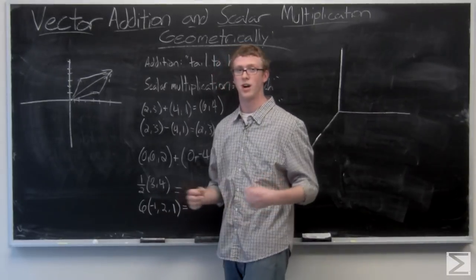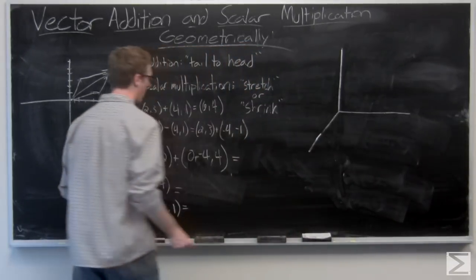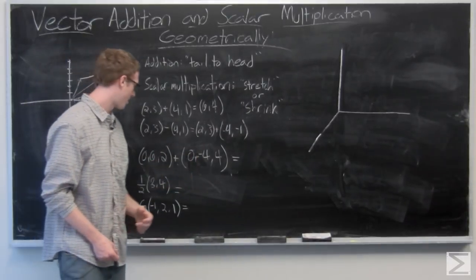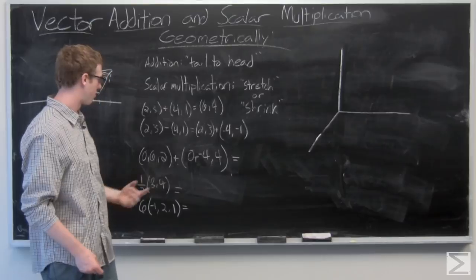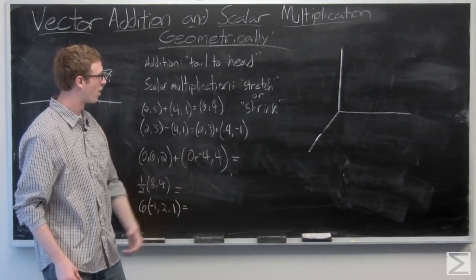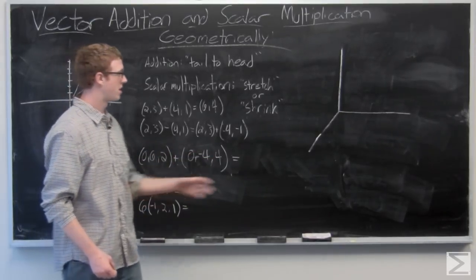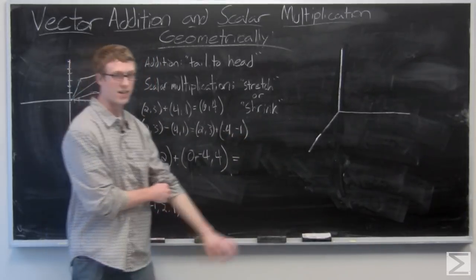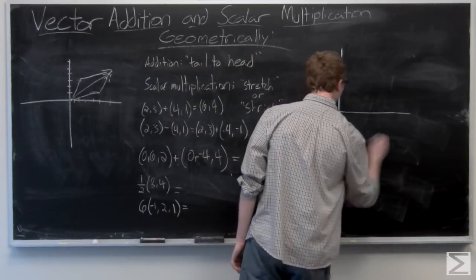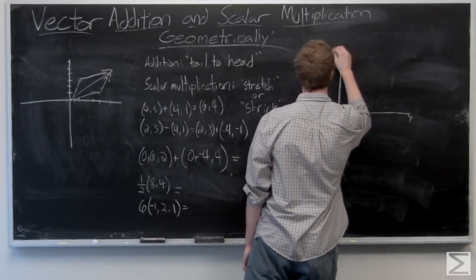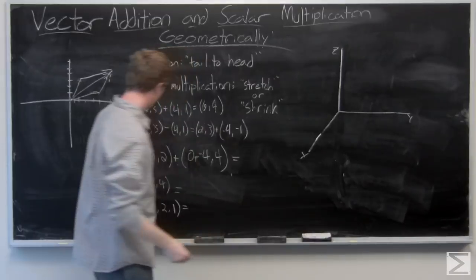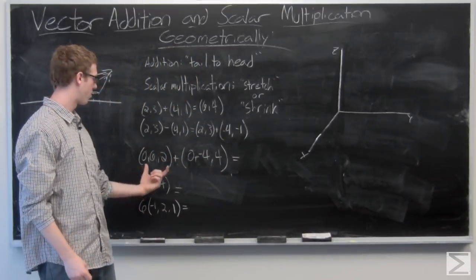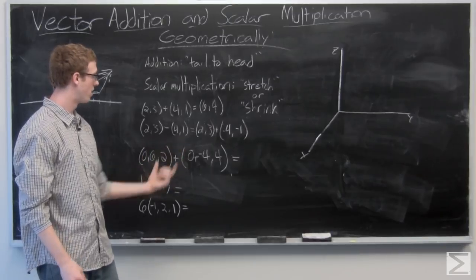Now we can take a look in three space. We have the vector (0, 6, 2) and (0, -4, 4). I've made it pretty simple on myself so I don't have to draw anything confusing coming out of the board. This is our x-axis. So we have (0, 6, 2) plus (0, -4, 4). Add the vectors component-wise: (0, 2, 6).